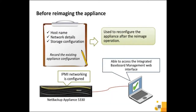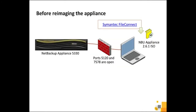Before you begin the re-image operation, make sure that the IPMI network is configured on your appliance. Also ensure that you can access the integrated baseboard management web interface from the remote computer. You first need to download the appliance 2.6.1 ISO image from the Symantec FileConnect website and store it to a local drive on the remote computer that will be used to connect remotely to the NetBackup Appliance 5330 IPMI network.